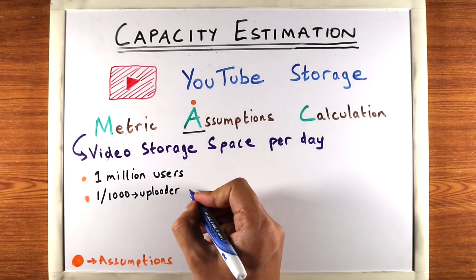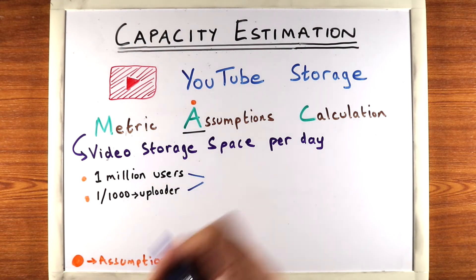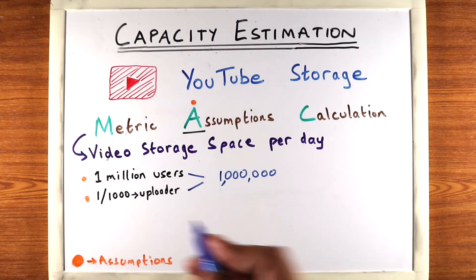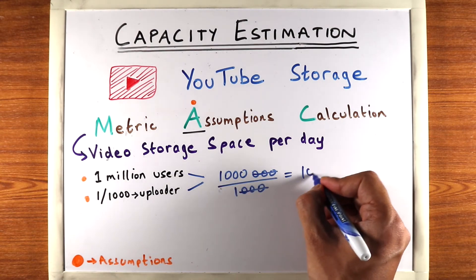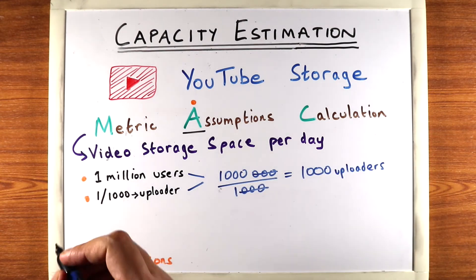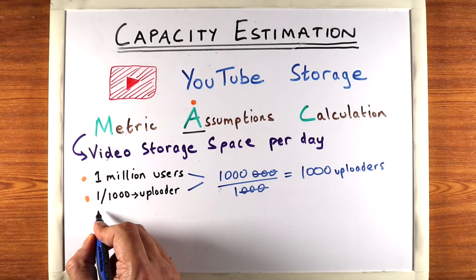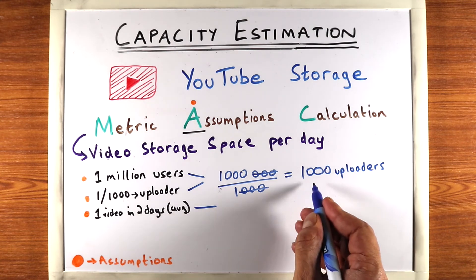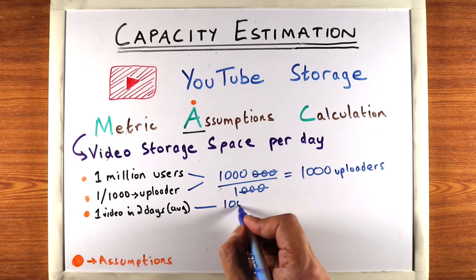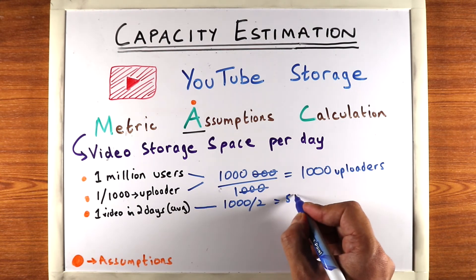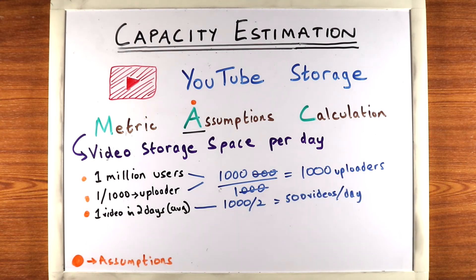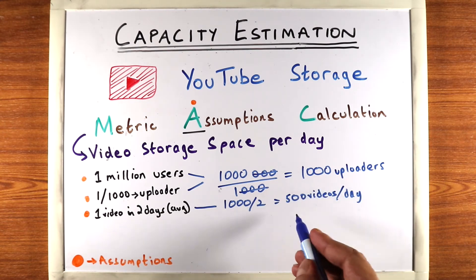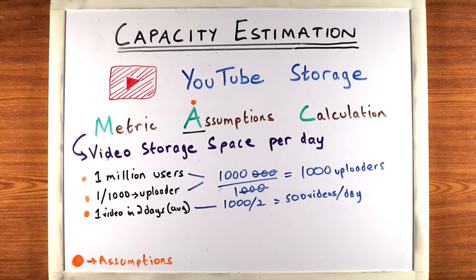Using these assumptions, we can calculate how many people will be uploaders — that's 1 million divided by 1,000, which gives us 1,000 uploaders in our system. If we assume that on average an uploader uploads one video every two days, then on average we'll see 1,000 divided by 2, which is 500 videos per day. So we've identified that 500 videos will be uploaded per day in our system.